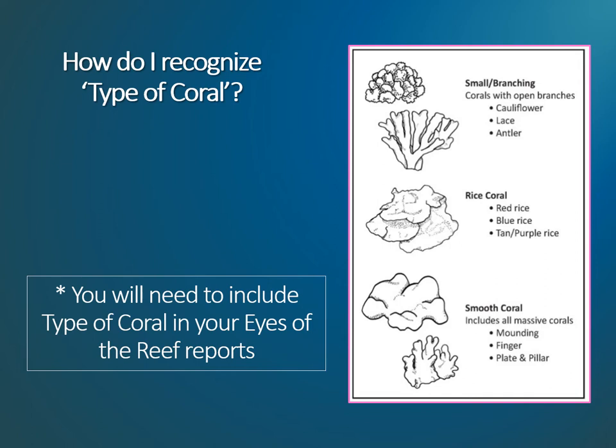the Eyes of the Reef Network has divided the common coral species into six general types, including small branching corals, rice corals, smooth mounding corals, smooth finger corals, smooth plate and pillar corals, and corrugated corals. If you observe a coral that doesn't fit into any of these types, it can be reported as other, as described in the notes section of your report.